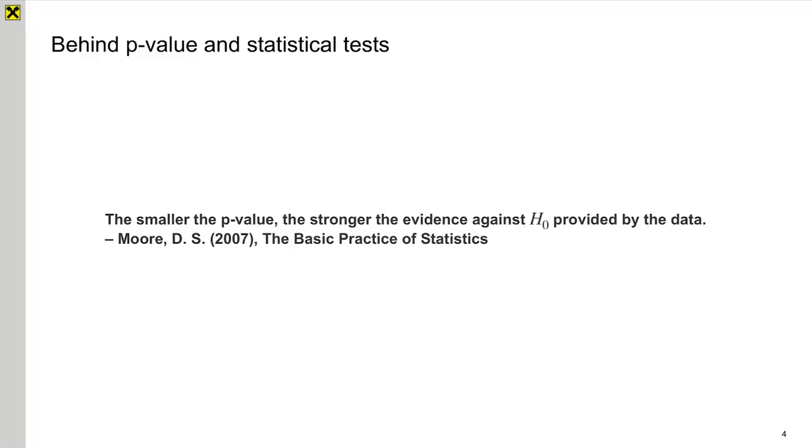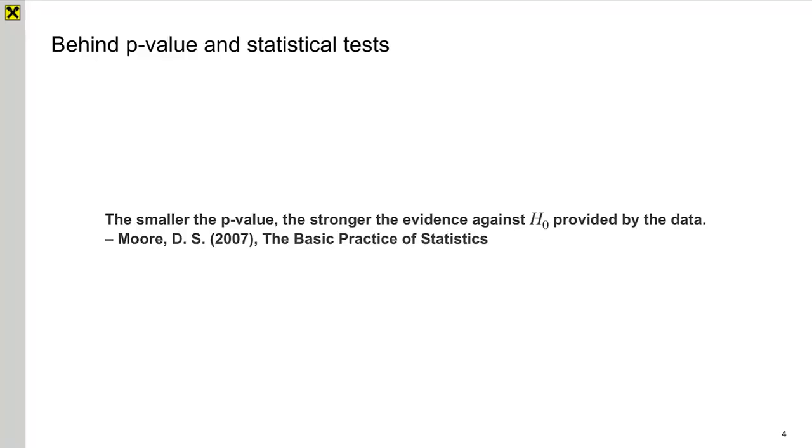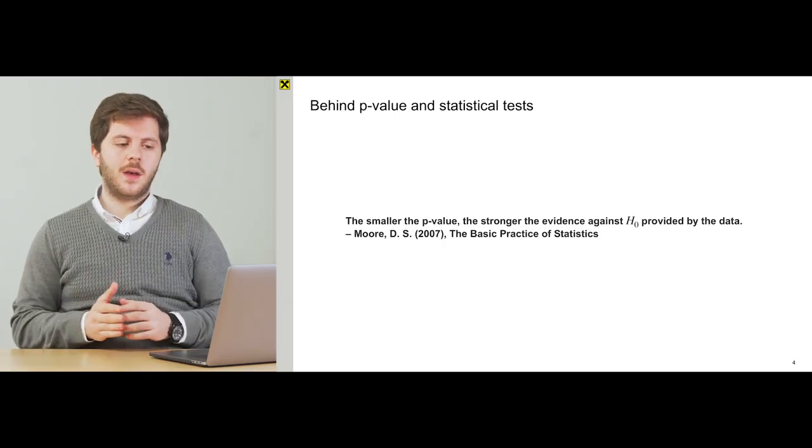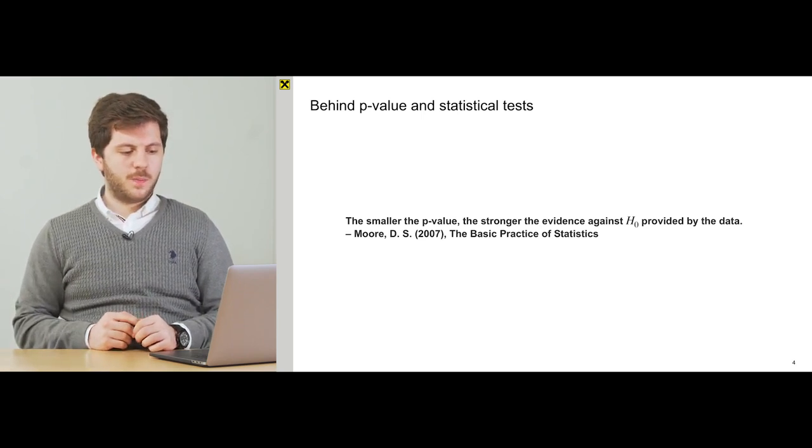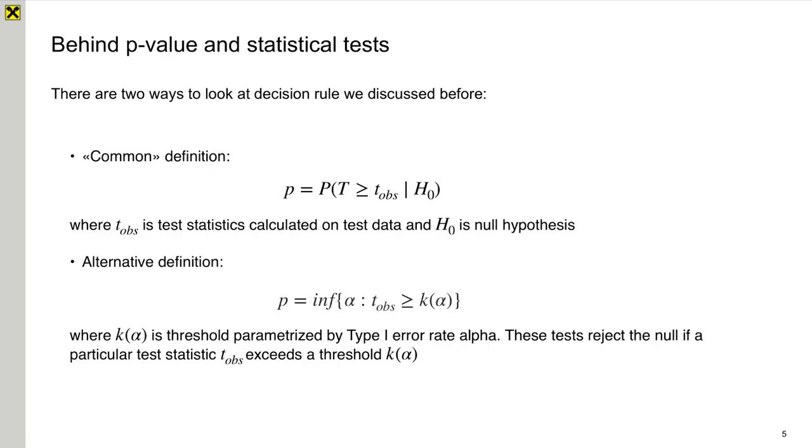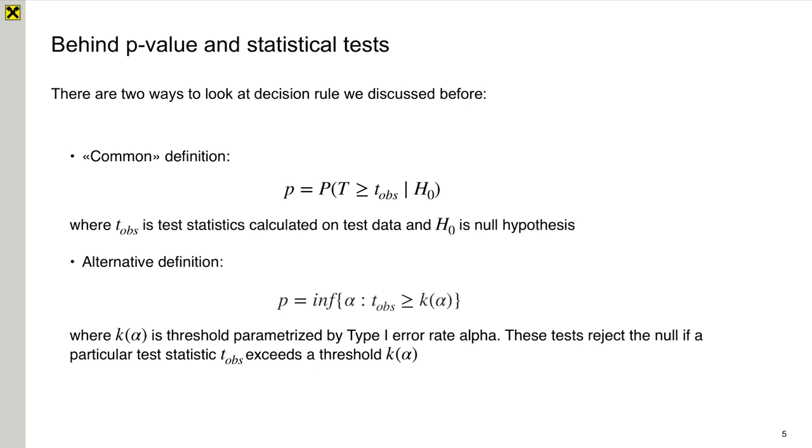But what is p-value? If we are talking with a person who doesn't know statistics very well, he will say that the smaller p-value, the better it is for us. He will be right, but as far as we are on advanced A-B testing section, I want you to provide some mathematics behind it. And this magical value which is called p-value could be defined in two ways. The first one is classical definition from Wikipedia, and it says that p-value is the probability of obtaining the same statistics or even more critical one if the null hypothesis is true.